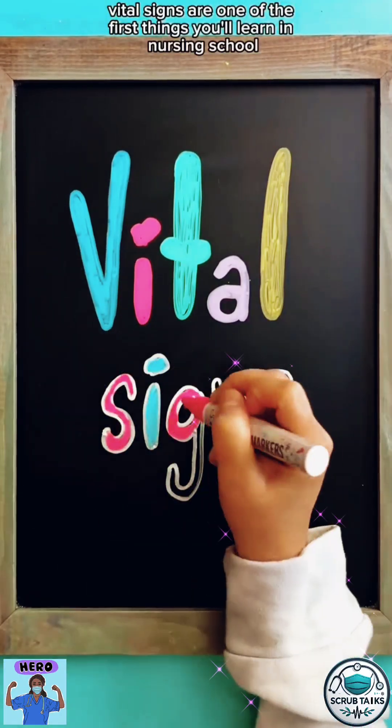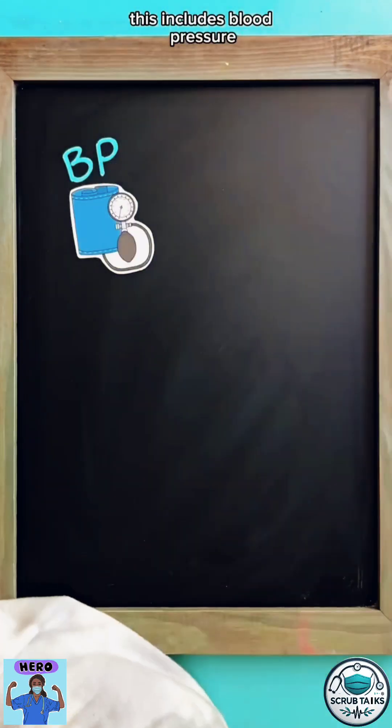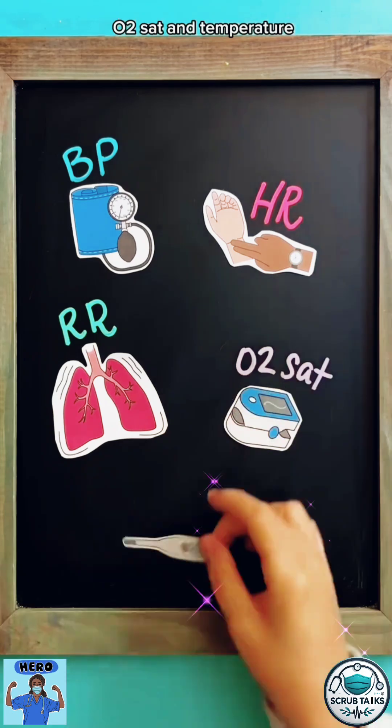Vital signs are one of the first things you'll learn in nursing school. This includes blood pressure, heart rate, respirations, O2 sat, and temperature.